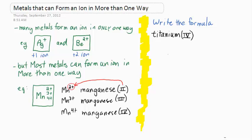Here's some practice. Write the formula for titanium four iodide, titanium four iodide. The answer is TiI4.